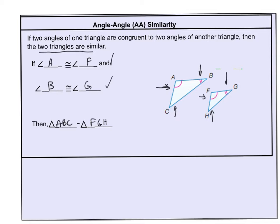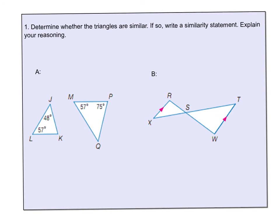Now let's look at the next example. Do we have enough information to tell if these triangles are similar by Angle-Angle? On the first triangle, the last angle would be 75 degrees because triangles add up to 180. That means over here the missing angle would be 48 degrees, again by triangles adding up to 180. So yes, by Angle-Angle, triangle JKL would be similar — not congruent, but similar.